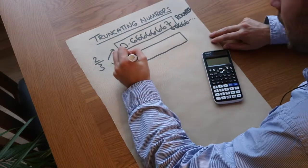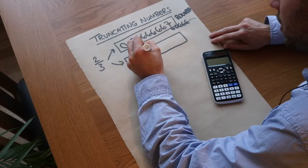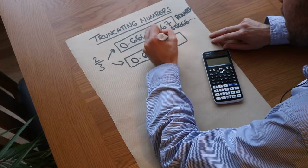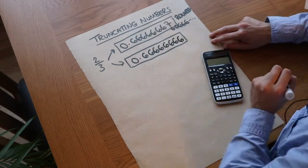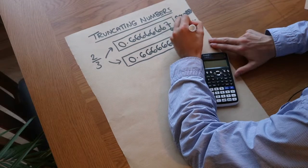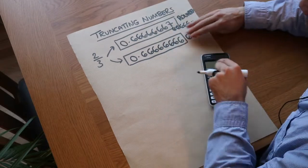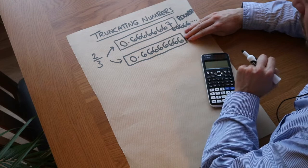But on some older calculators, you actually get 0.666666666, and what it's done is it's taken those remaining sixes and just chopped them off without making this digit one greater.